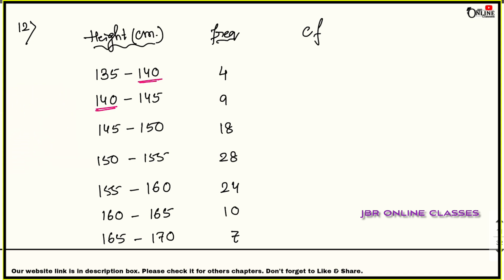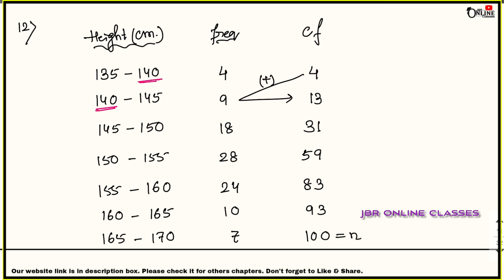Now let's find the cumulative frequency. First CF = 4 (same as frequency). Then 4 + 9 = 13. Then 13 + 18 = 31. Then 31 + 28 = 59. Then 59 + 24 = 83. Then 83 + 10 = 93. Then 93 + 7 = 100. So n = 100, which is again even.